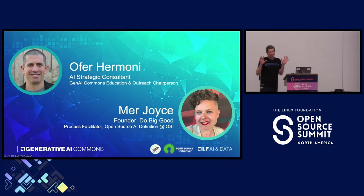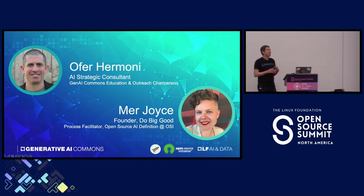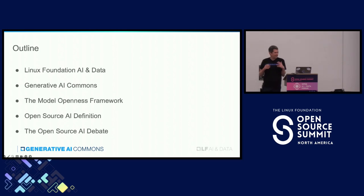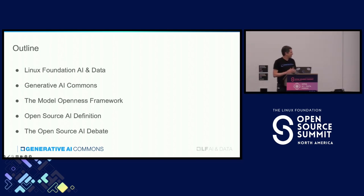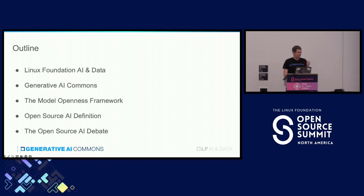We know the definition of open source software for many years and it's defined more easily, but open source AI models are way more complex and we will explain why. I'll start with a little background about Linux Foundation AI, then share about the Generative AI Commons, which is part of Linux Foundation AI, then discuss the Model Openness Framework. Mary will then present the process at the Open Source Initiative, followed by an open discussion about whether we should even open source AI and how.